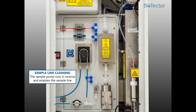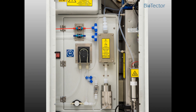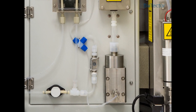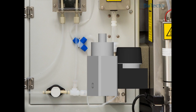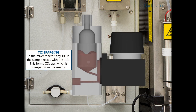The sample pump runs in reverse and empties the sample line. The sample valve then opens. In the mixer reactor, any TIC in the sample reacts with the acid. This forms CO2 gas which is sparged from the reactor.